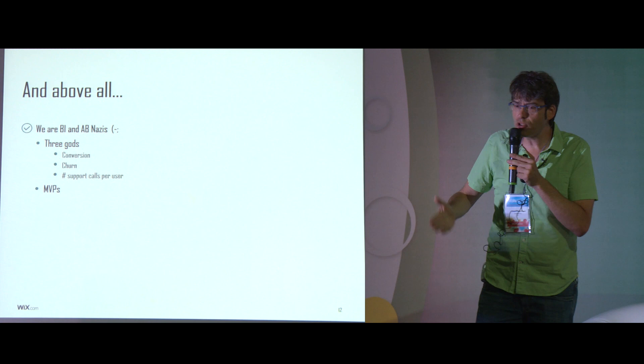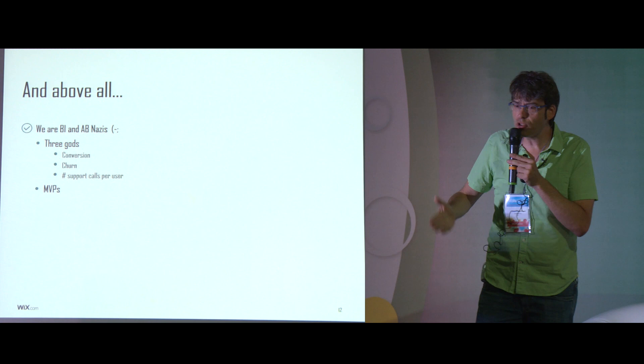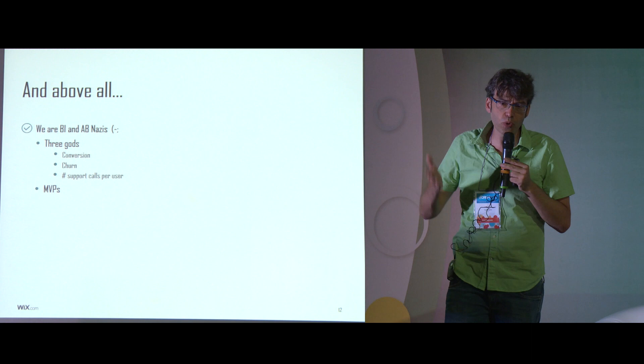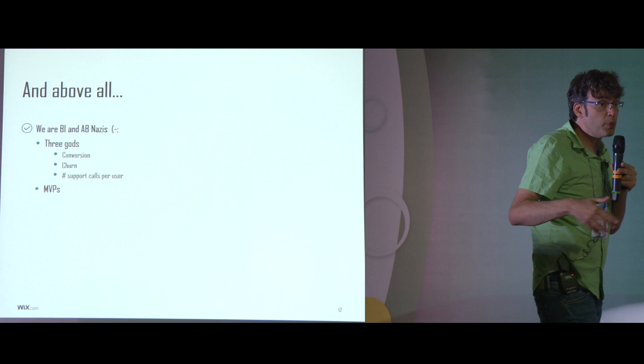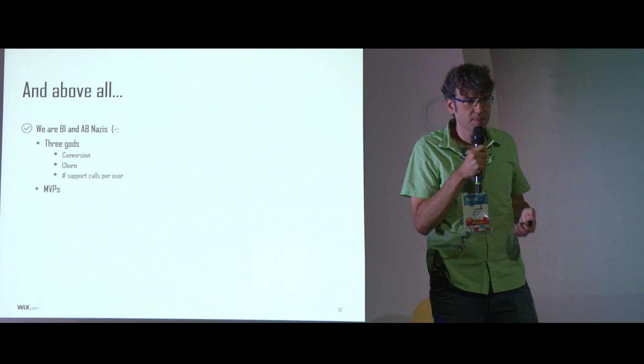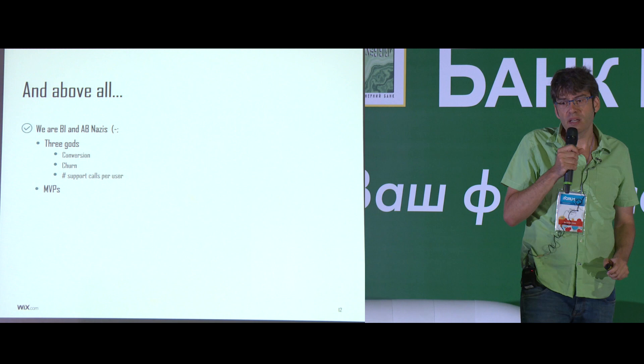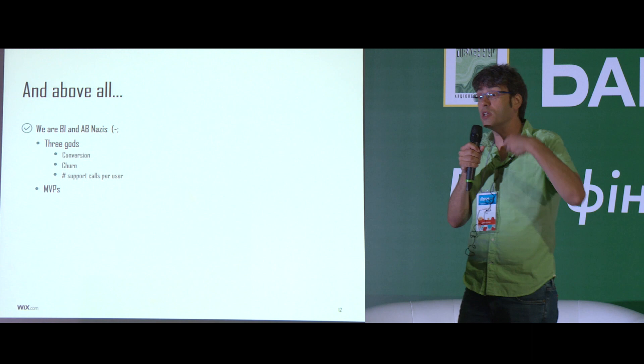Another very effective way to use data is A/B testing. When you launch a new feature, divide your users into two groups: give Group A the new feature, don't give it to Group B. See which group performs better on your KPIs — conversion, churn, whatever is relevant to your business. Maybe the feature made no impact. If it didn't make an impact, it's a bad feature — it made your product more complex, you need to support it and continue working on it. So take it out.